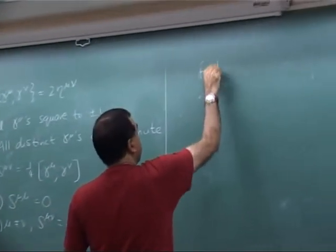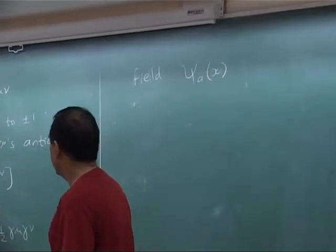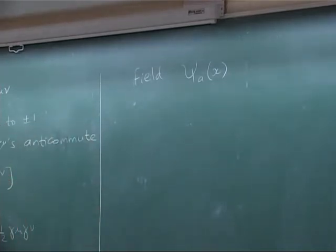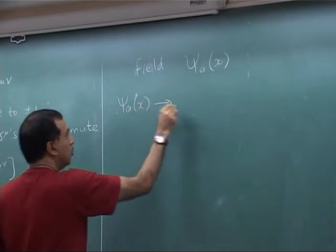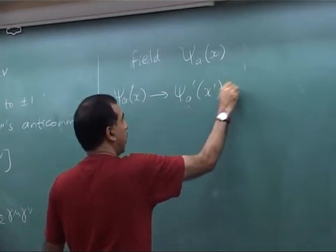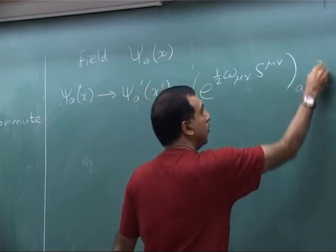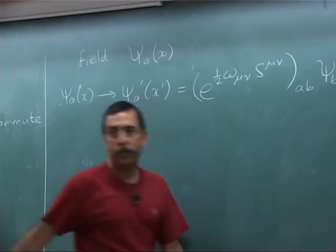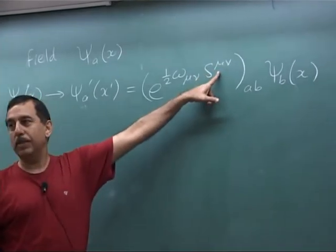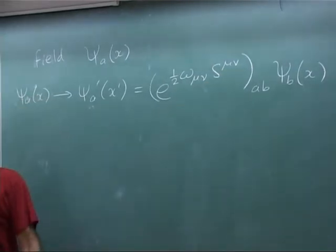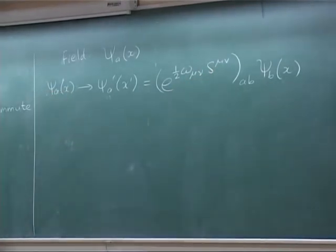Now let's implement this idea in field theory. We introduce a field psi_A of x, which transforms under Lorentz transformations using this matrix: psi_A goes to psi_A prime of x prime, which equals e to the half omega mu nu S mu nu times psi. That's the transformation of psi. It's exactly like the transformation of A mu except there it was replaced by V mu nu, the vector representation, and for scalars S is replaced by 0, the trivial representation. The same formula holds for everybody.